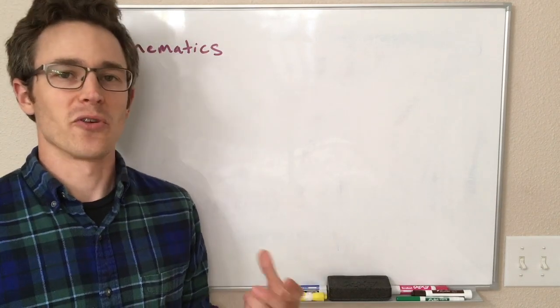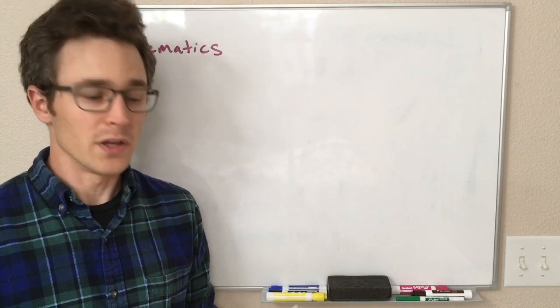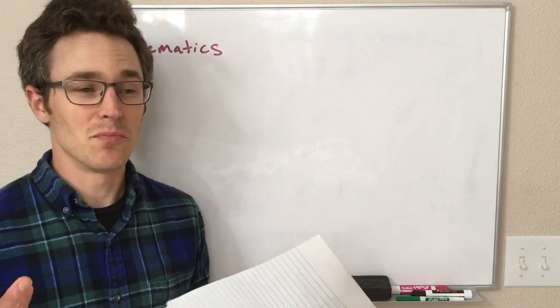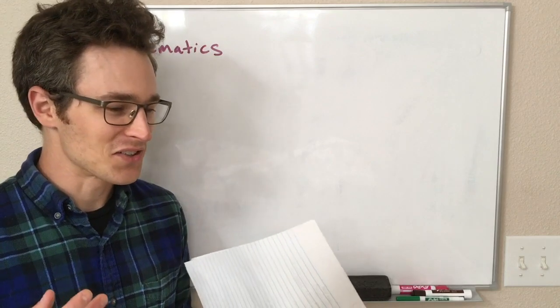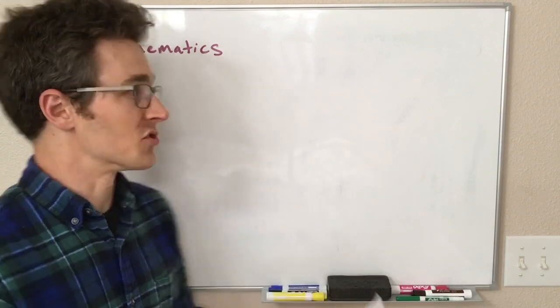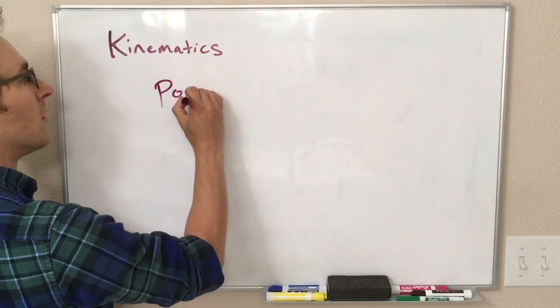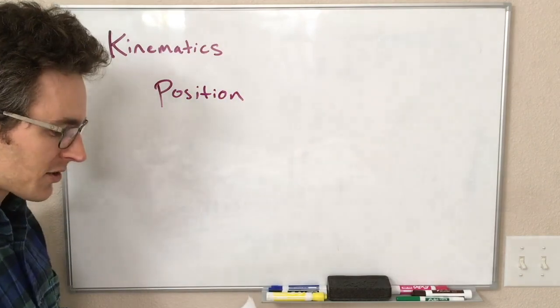So if we want to describe and measure the motion of an object, how do we do that? Well, the first thing we have to do is be able to talk about where it is at any particular moment of time, that is its position. So our first topic in kinematics is going to be the position of an object.